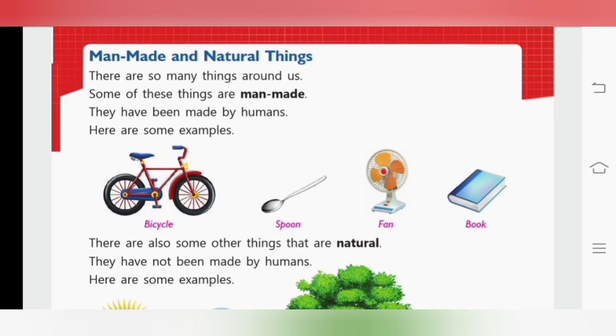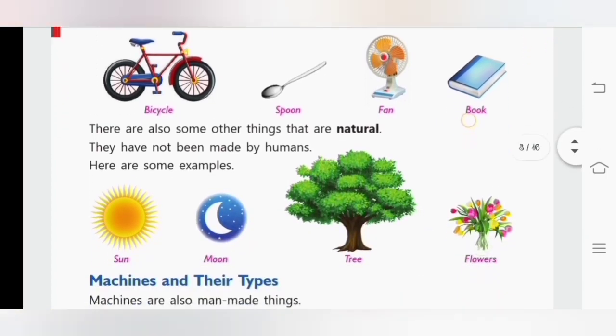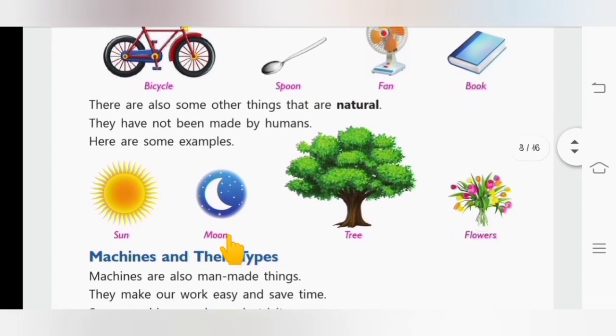Now let us see. There are also some other things that are natural. They have not been made by humans. Here are some examples. Sun, moon, tree and flowers. So what are natural things? The things that naturally exist in this world are called natural things which are not made by humans.